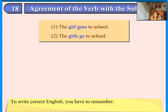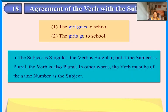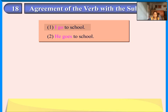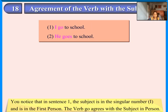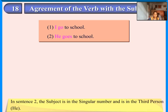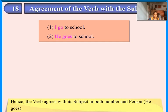To write correct English, you have to remember: if the subject is singular, the verb is singular; but if the subject is plural, the verb is also plural. In other words, the verb must be of the same number as the subject. Examine these sentences: 'I go to school.' 'He goes to school.' The subject 'I' is first person singular; 'He' is third person singular. Hence the verb agrees with its subject in both number and person: he goes.